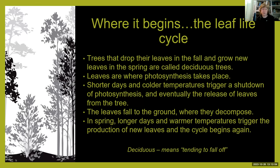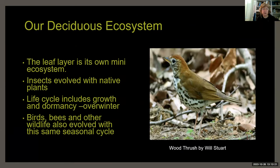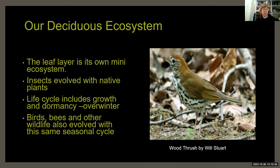The leaves fall to the ground, start to decompose, and in spring the cycle starts back up again. When those leaves fall to the ground, they create their own little mini ecosystem. Plants and insects evolved specifically with this in mind — our native insects evolved with this flow of spring and summer, and they also tend to go dormant over the winter, just like our trees.